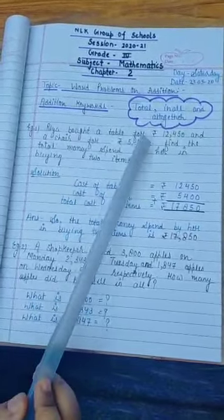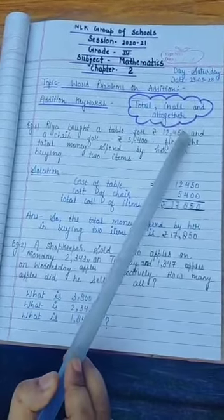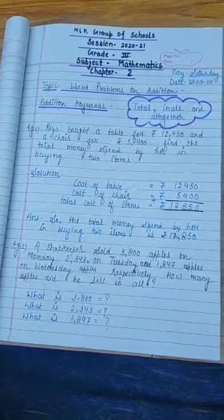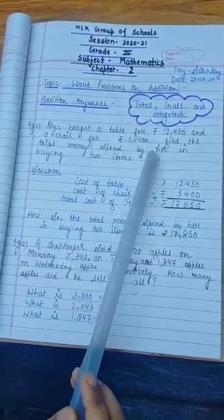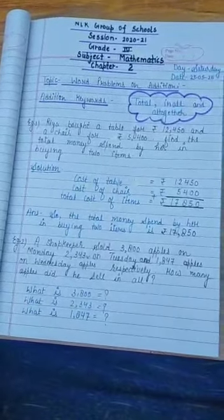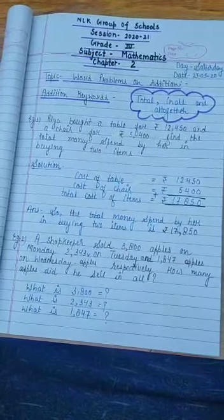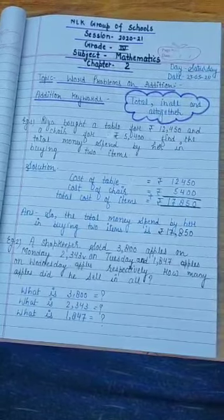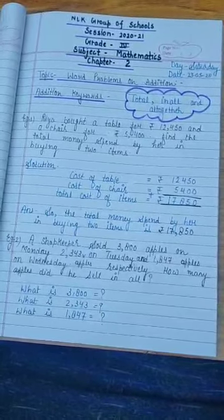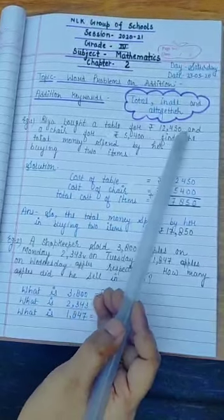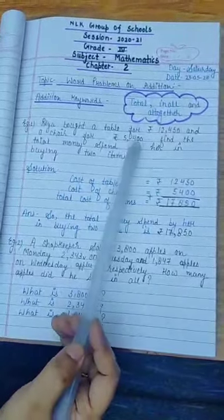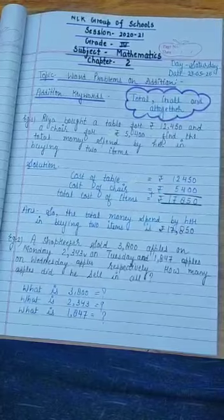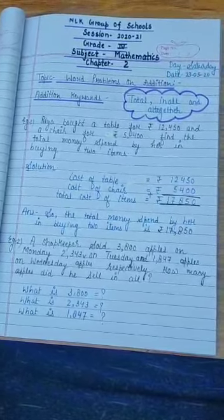Rhea bought a table for rupees 12,450 and a chair for rupees 5,400. To understand the problem well and to know what to write as statements, ask these questions. What is rupees 12,450 and what is rupees 5,400? The answer to these questions will help us form statements for this solution.